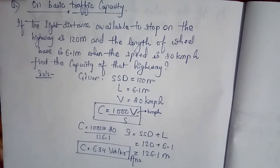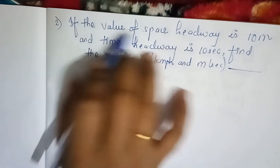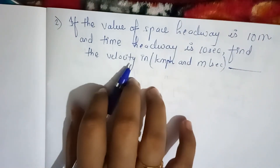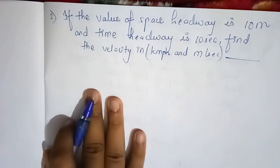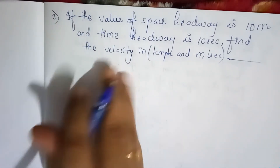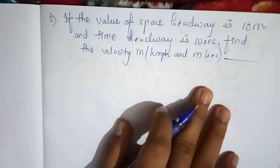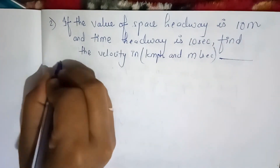Now the second important question. If the value of space headway is 10 meters and the time headway is 10 seconds, find the velocity in kmph and meter per second. If you have watched the previous video, you can solve this easily. The playlist link is in the description box — please cover previous lectures first.